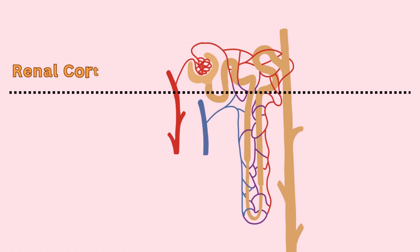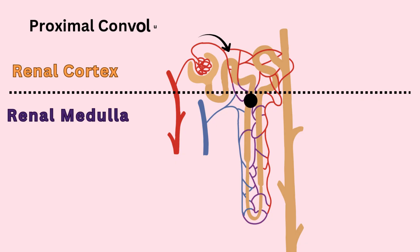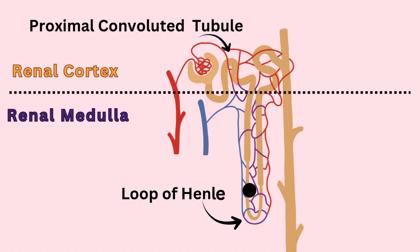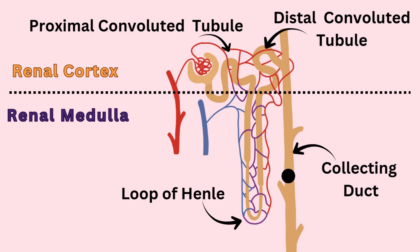From there, the filtered fluid moves to the medulla then back to the cortex through a series of tubules: the proximal convoluted tubule, the loop of Henle with descending and ascending limbs, the distal convoluted tubule, and finally the collecting duct.